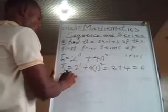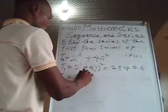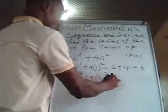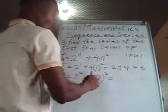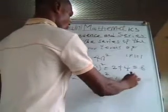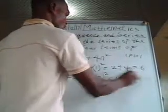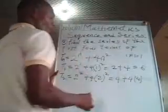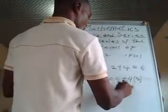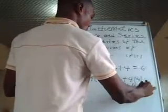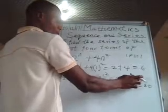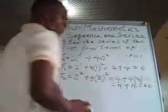Now t2 will give us 2 raised to the power 2 plus 4 times 2 squared. 2 raised to the power 2 is 2 times 2 which equals 4. And 2 squared is 4, so 4 times 4 gives us 16. Therefore 4 plus 16 gives us 20.